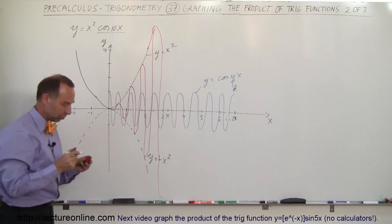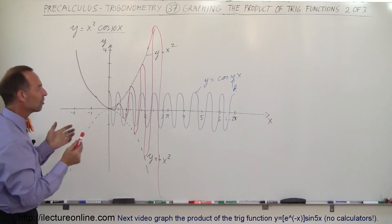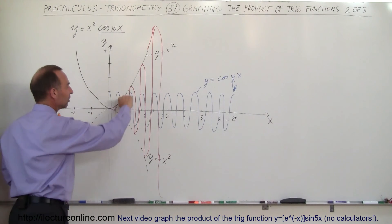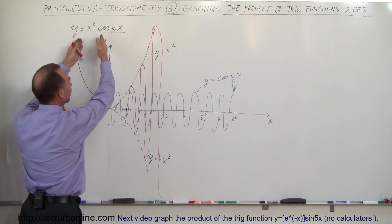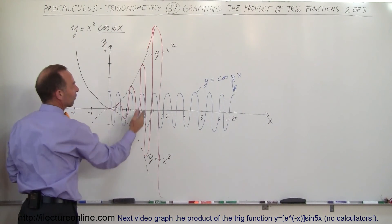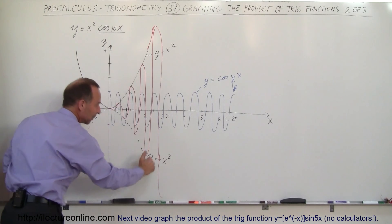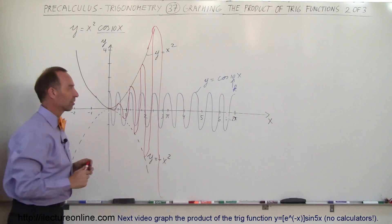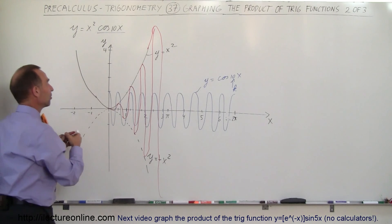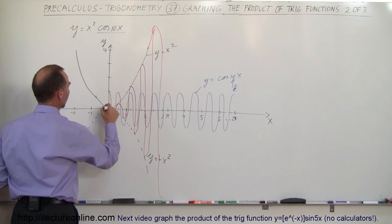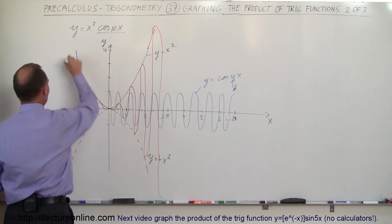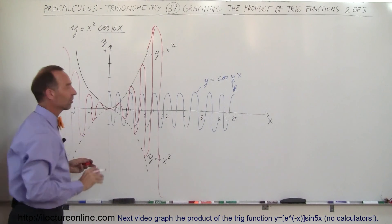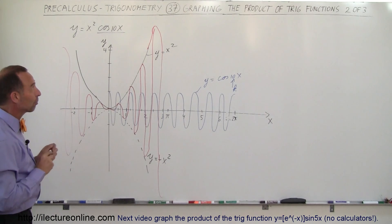So that's the product of the two functions. I'm not doing as good a job as a calculator would, but you can see that the oscillations will get bigger and bigger because when you multiply x squared times cosine of 10x, a positive value becomes much bigger and a negative value becomes much bigger in the negative direction. On the negative side you get exactly the same behavior, and that's how you graph the product of two functions.